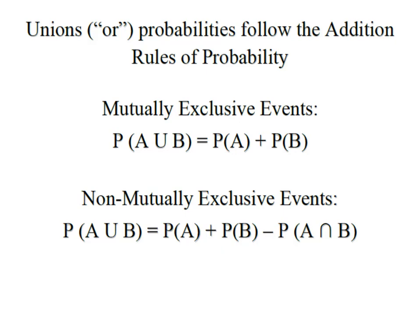For mutually exclusive events where A and B have nothing in common, we'll simply add the two probabilities together. When we have non-mutually exclusive events — in other words there are some items that are both A and B — we have to subtract out the duplicates.